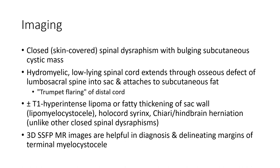Imaging: closed spinal dysraphism with bulging subcutaneous cystic mass. The hydromelic low-lying spinal cord extends through an osseous defect of the lumbar sacral spine into the sac and attaches to subcutaneous fat, with trumpet flaring of the distal cord. Plus or minus T1 hyperintense lipoma or fat thickening of the sac wall, lipomyelocystocele, hollow cord syrinx, and hair-pin cord penetration, unlike other closed spinal dysraphism.